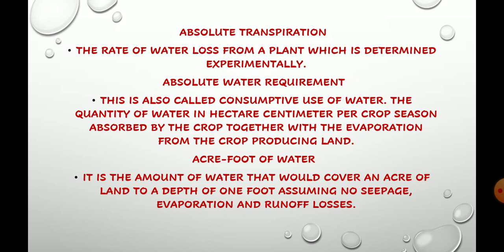The quantity of water in hectare-centimeter per crop season, absorbed by the crop together with the evaporation from the crop-producing land, is known as absolute water requirement. So we account for both the water absorbed by the crop and the evaporation component over a full crop season.